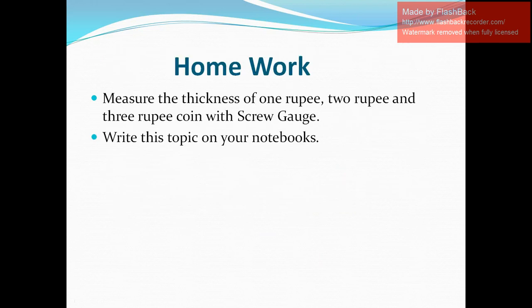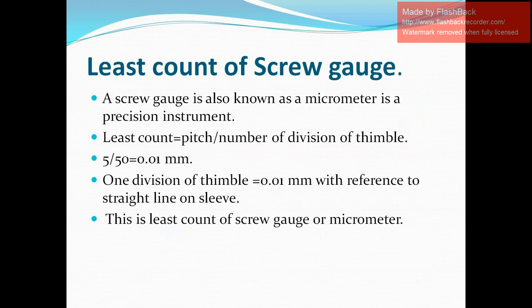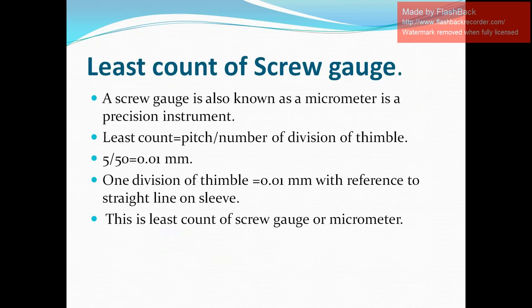Your homework is to measure the thickness of a 1 rupee, 2 rupee, and 5 rupee coin with the screw gauge and write the readings in your notebook. To summarize: the screw gauge is an instrument used for measuring the diameter of a thin wire or thickness of a sheet of metal, and its least count is 0.01 mm — the smallest reading that can be measured.